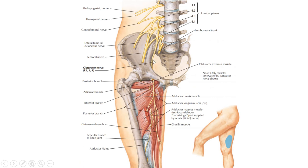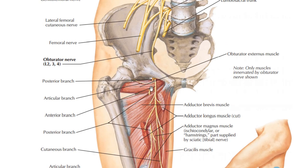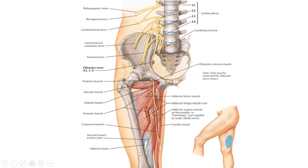Here we have the obturator nerve, which supplies the medial compartment or adductor compartment muscles. The obturator nerve arises from the lumbar plexus, passes behind the superior ramus of the pubic bone, and divides into anterior and posterior branches. The posterior branch pierces the obturator externus and, after passing through the adductor hiatus, gives an articular branch to the knee joint.